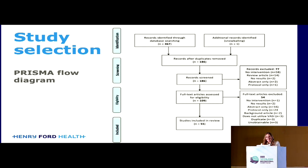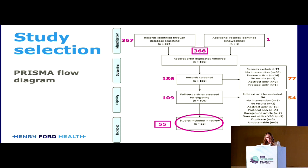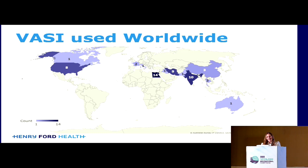For article selection, we started with 367 articles found through the search and one manual search for 368 total. After removing duplicates, we went down to 186, excluded 77 based on basic criteria, then went to 109, and excluded 54 on full-text review to include 55 studies. We found that VASI was used worldwide. The country with the highest number of VASI articles was Egypt at 14, followed by India at 10, Iran at 9, and the USA at 8.